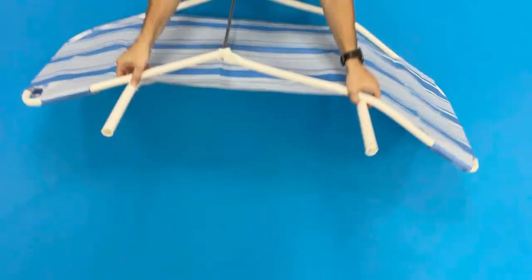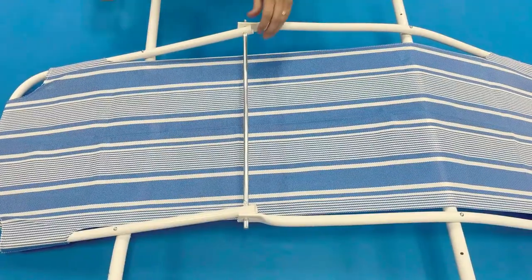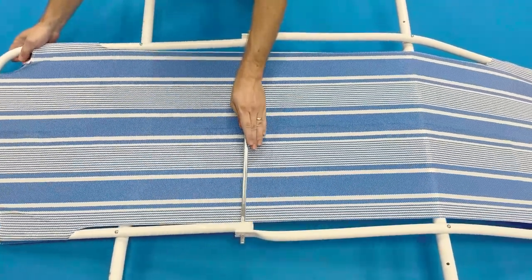Lay frame back down and turn over so aluminum rod is facing up. Press down hard on the aluminum rod so the frame is inverted.